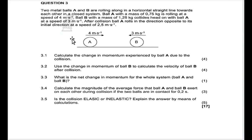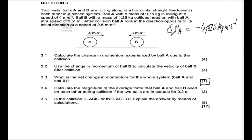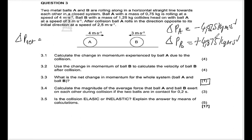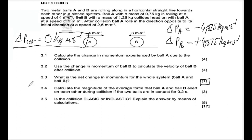Question 3.3 asks: what is the net change in momentum for the whole system — ball A and ball B? Note it's only one mark. The change in momentum for ball A is negative 4.875 kg·m/s and the change in momentum for ball B is positive 4.875 kg·m/s. So the net change in momentum is negative 4.875 plus 4.875, which equals zero kg·m/s.